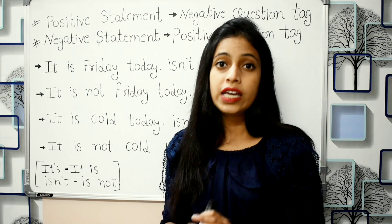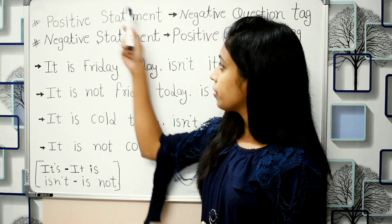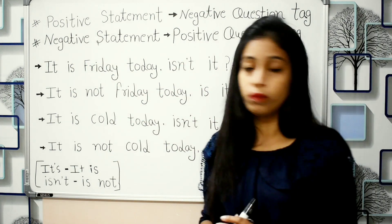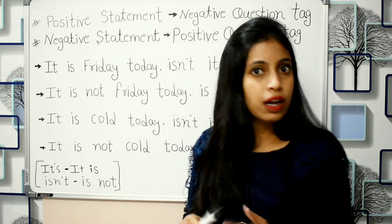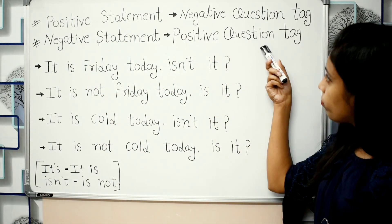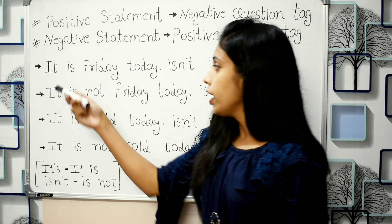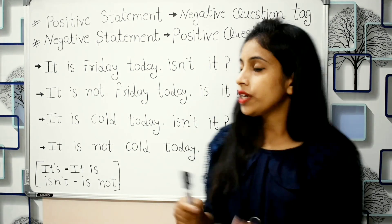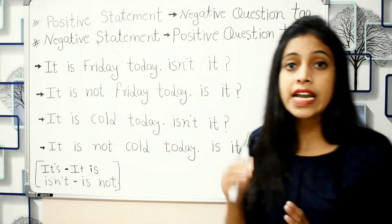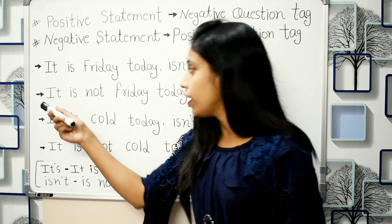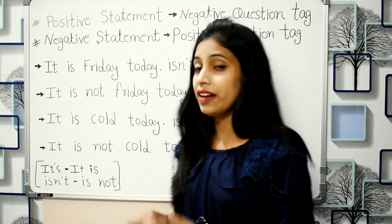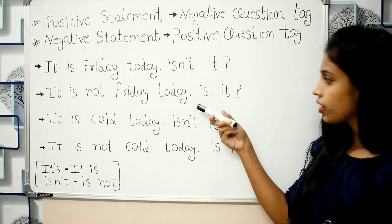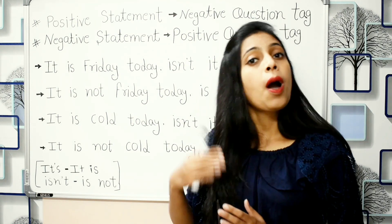The question tag has a very important rule: if our statement is positive, then our question tag is negative. And if our statement is negative, then our question tag is positive. For example, 'Today is Friday' is positive, so the tag 'isn't it' is negative. 'It is not Friday today' is negative, so the tag 'is it' is positive.